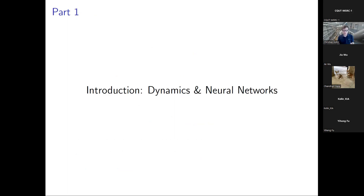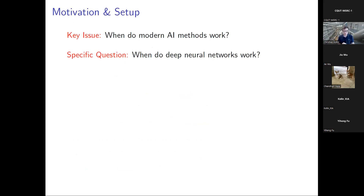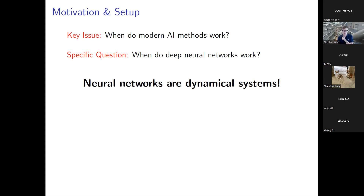My background is trying to understand why things in AI work. The key issue is: when do modern AI methods actually work? We know many instances when they do and some when they don't. I will look at neural networks, which have become one of the workhorse theories, and ask why they do what they do. Neural networks are dynamical systems — you can describe them as flows or iterated maps.